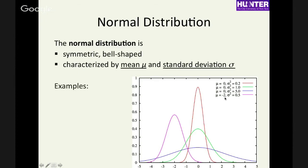Over here on the left we have a mean of minus two — the peak is at minus two — and a variance of 0.5, so it falls somewhere between the first two examples.